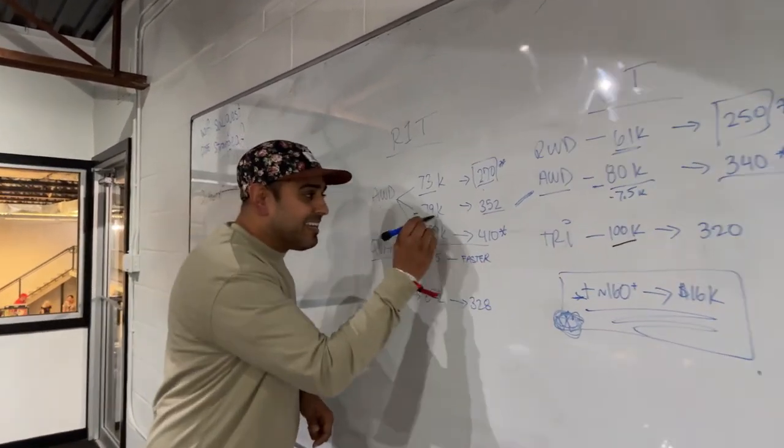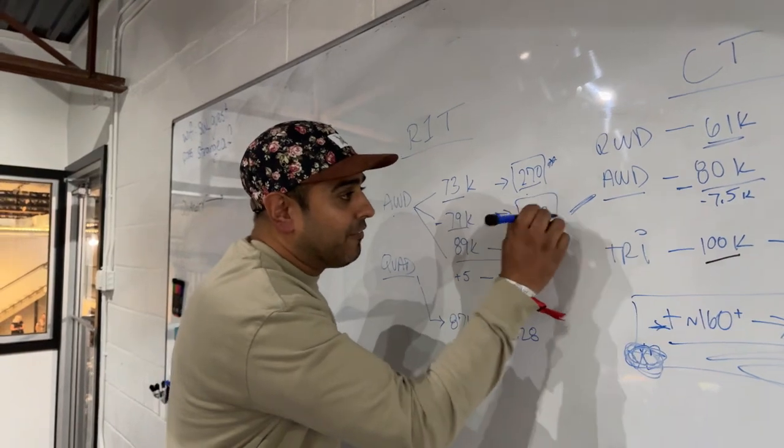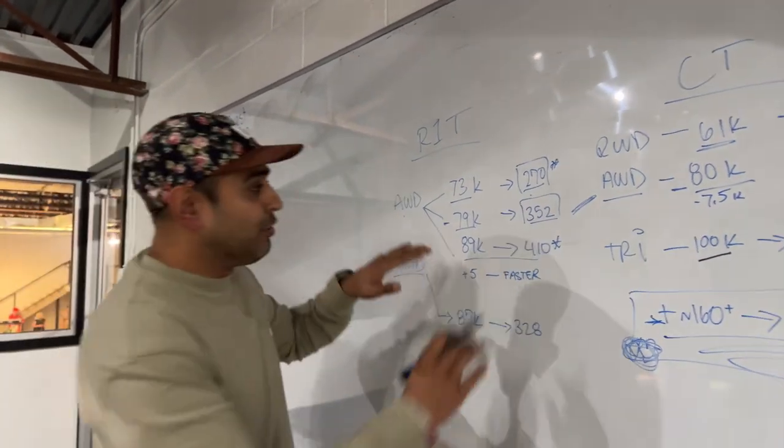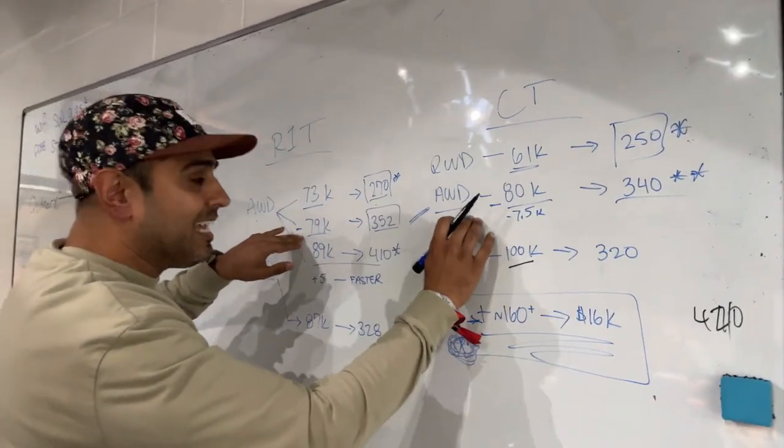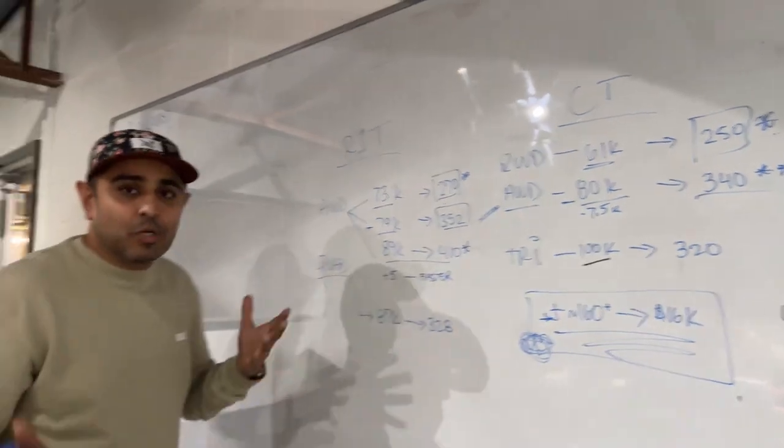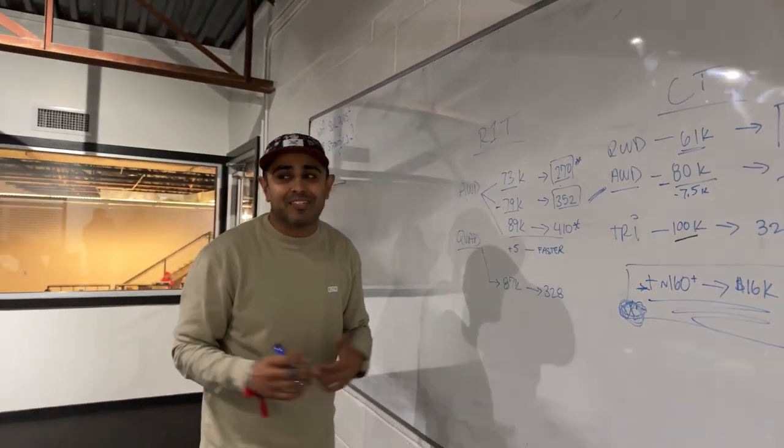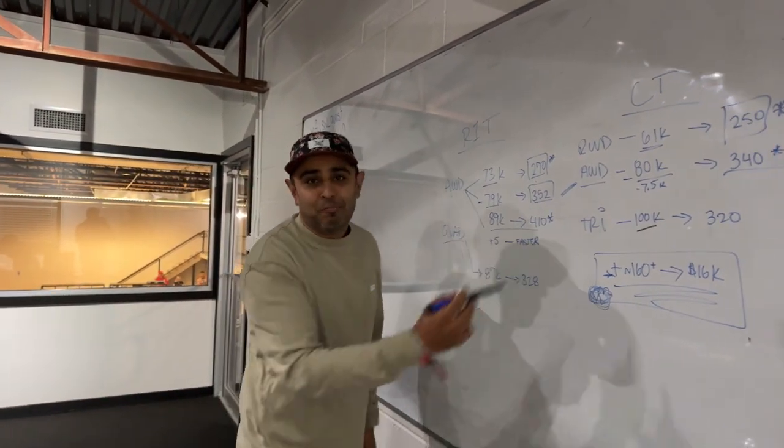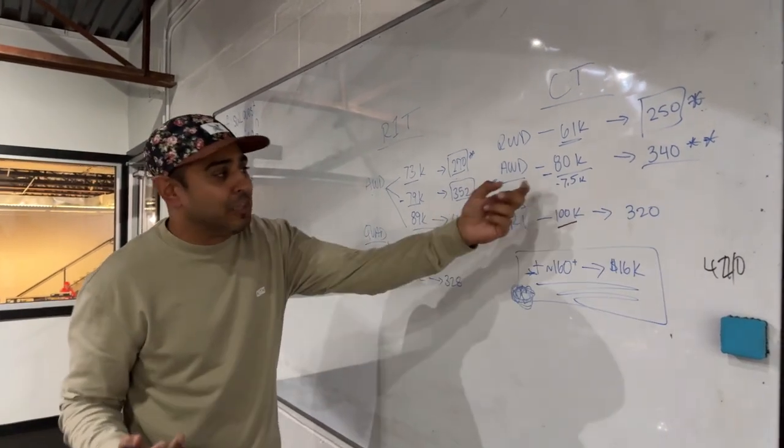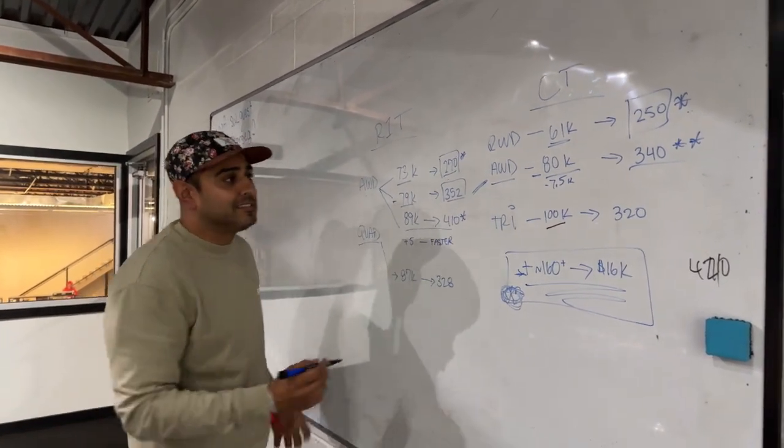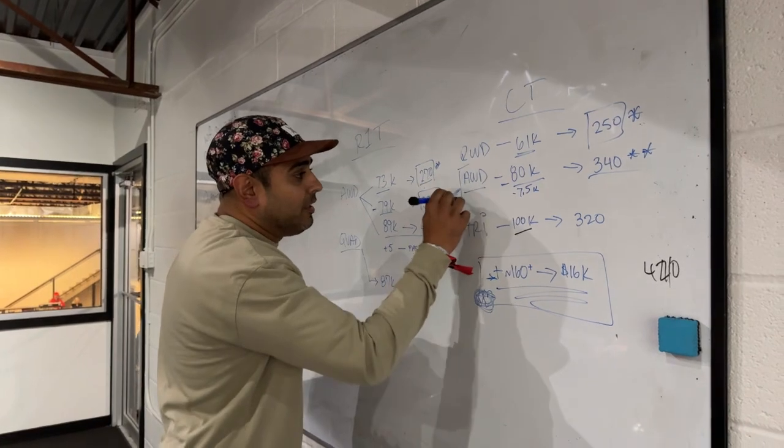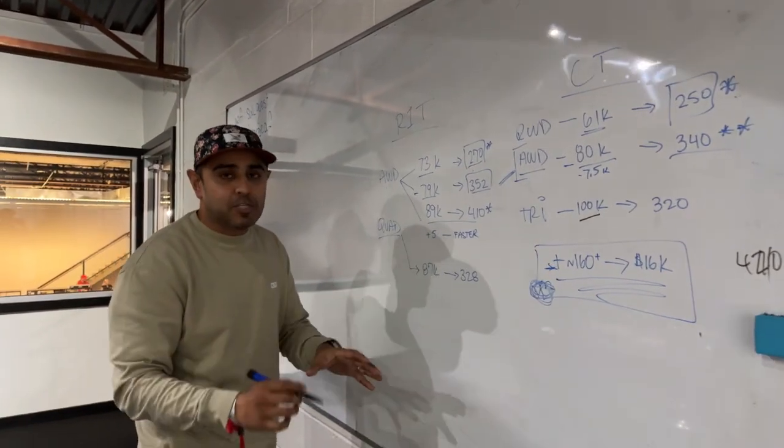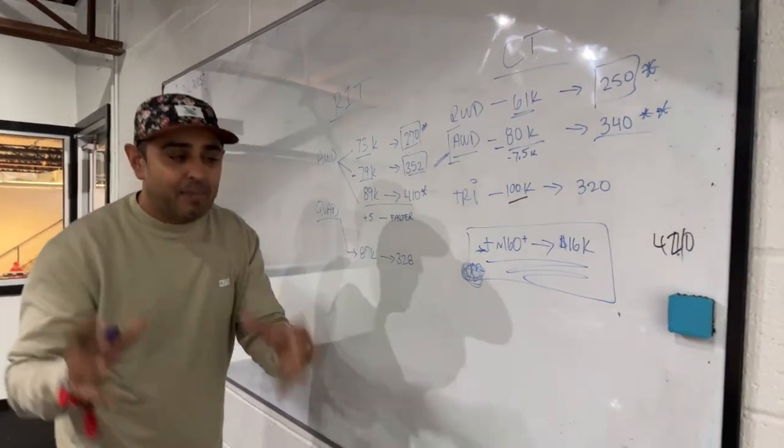If you look over at R1T, they have the same exact thing - $80,000 and a 352 mile range. So these two are almost identical. When you're weighing out the differences, a bulletproof truck sounds pretty nice, a truck with a larger payload sounds pretty nice, and so Cybertruck is going to win there. Not only that, but there is an option for an extended battery.